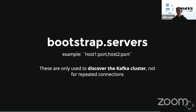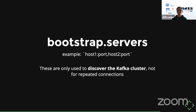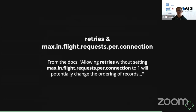Bootstrap servers tell your producer how to connect to Kafka — you provide a comma-separated list of broker host and port. These are just used to discover the Kafka cluster, not for every request. You don't have to provide every single broker; as long as you provide a few and they're not all down when your application starts, it will connect to the cluster and then be made aware of all the other brokers it needs.